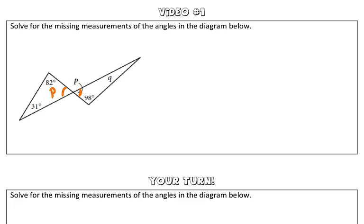We know that the sum of the interior angles of a triangle is 180 degrees. So to set up an equation, we have 82 plus 31 degrees plus P is equal to 180 degrees.